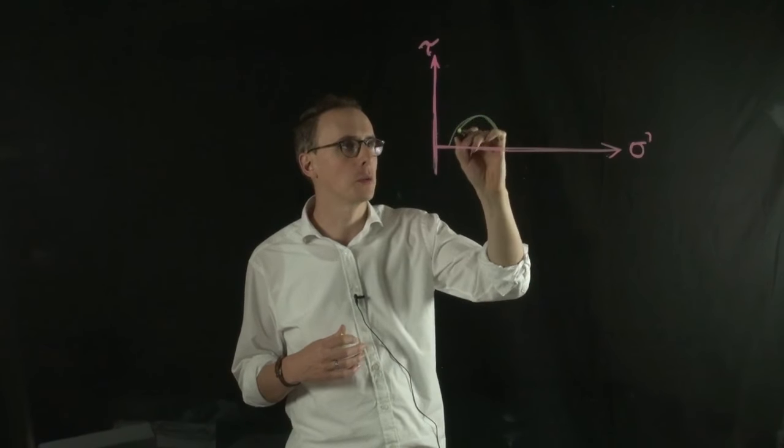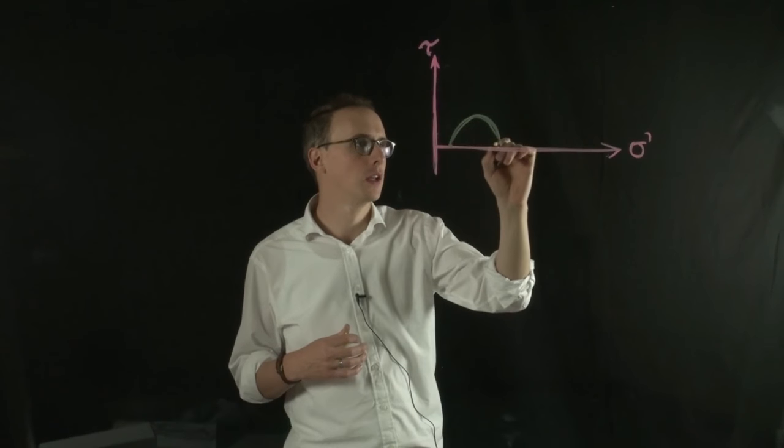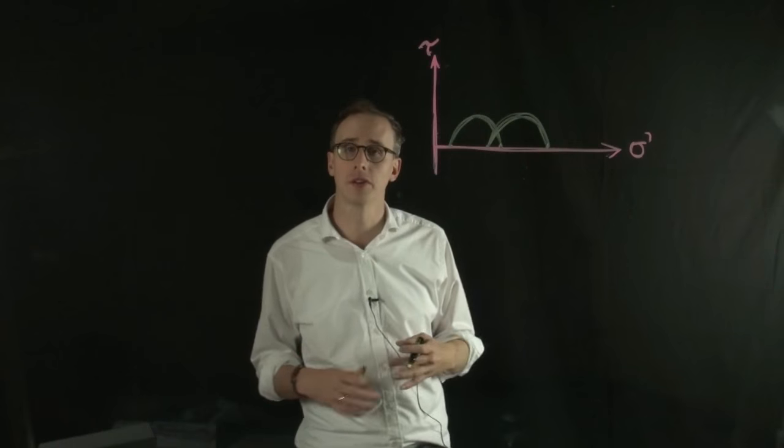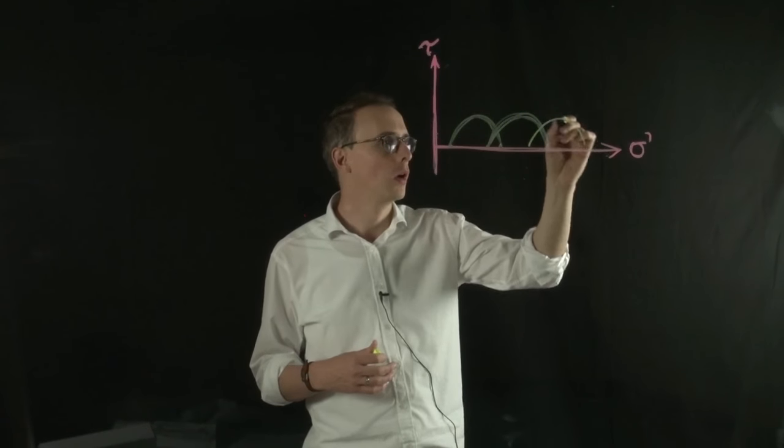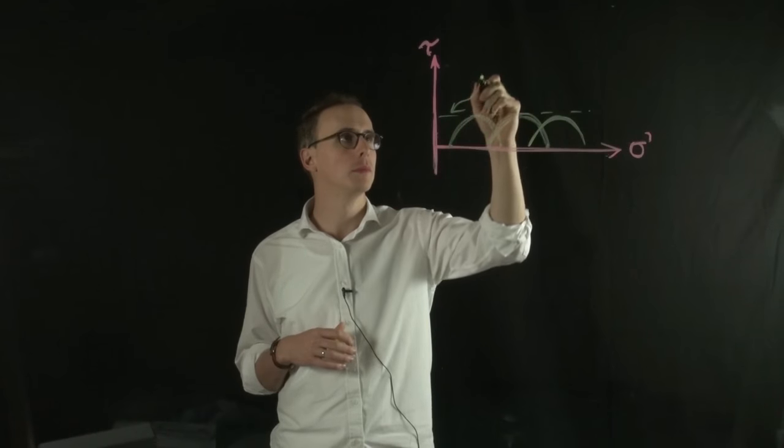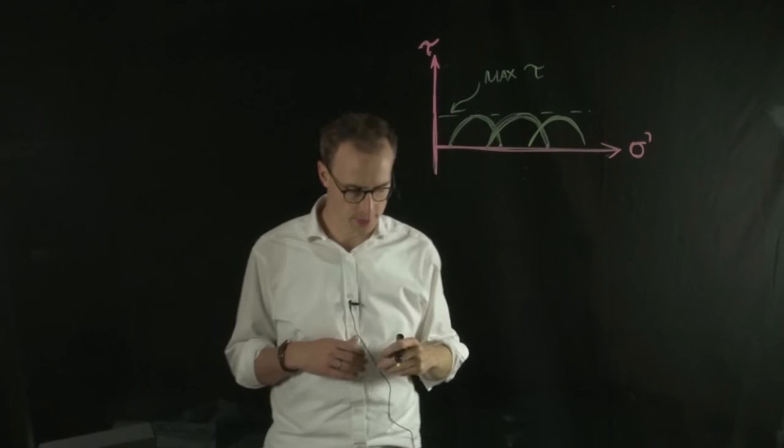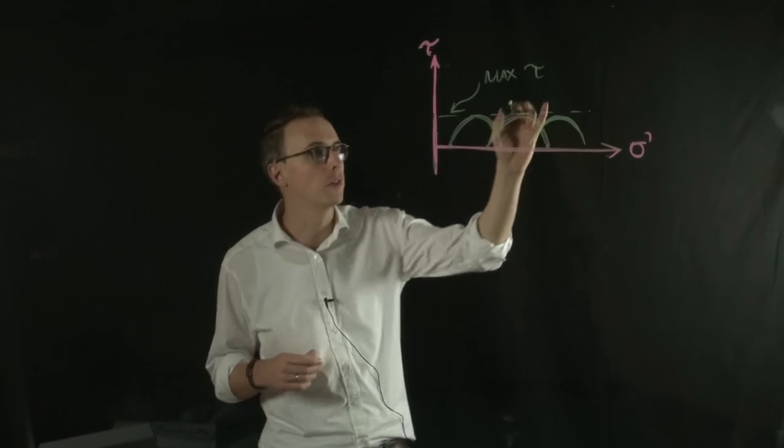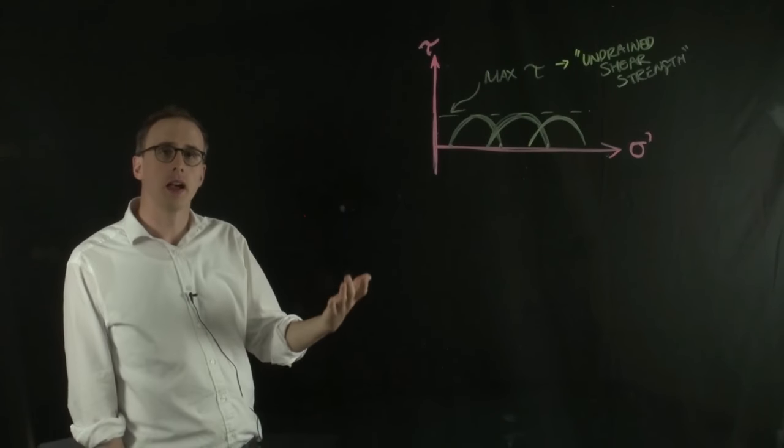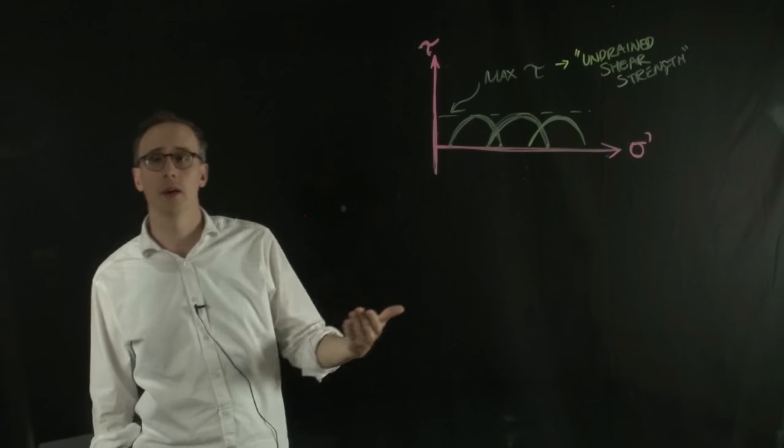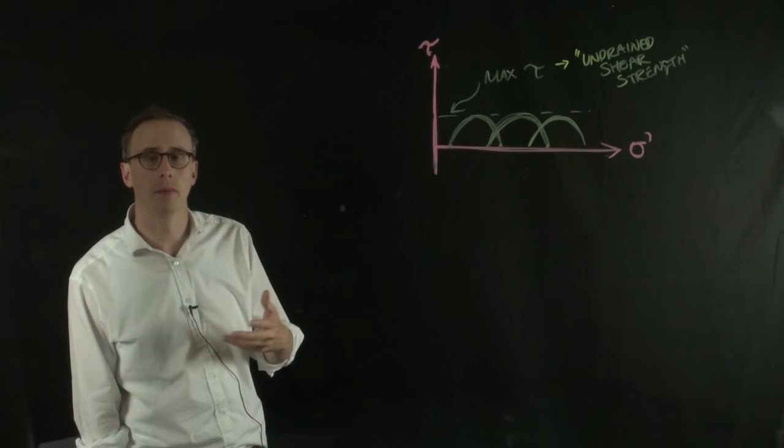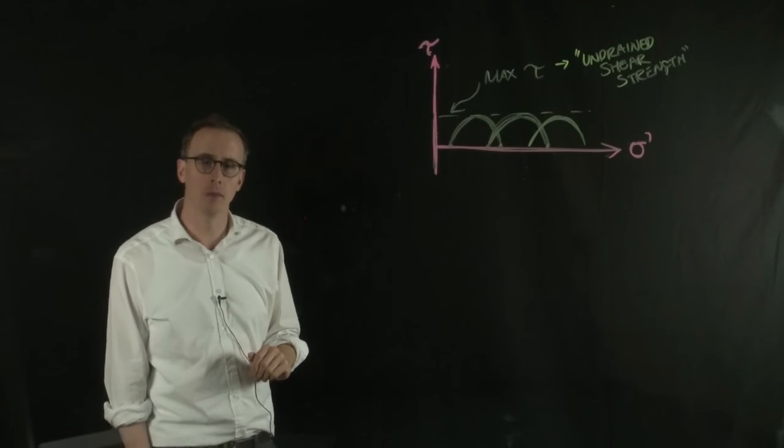The results of an undrained test would look like this, where no matter where you started your test or what stress range you did it under, you would only ever reach the same maximum shear stress. Multiple Mohr circles of stress, but all reaching the same maximum shear stress. That's called the undrained shear strength of the material. There are also variants between consolidated and unconsolidated, and that means whether we allow the material to consolidate before the test. I've put a matrix of these different tests on my website.